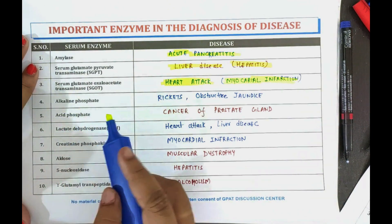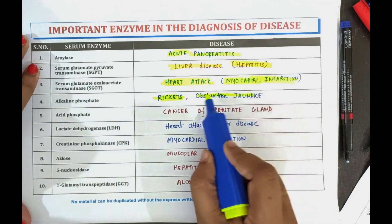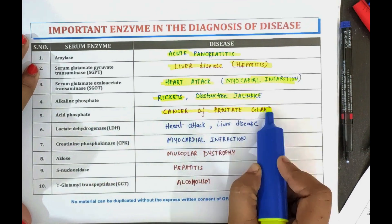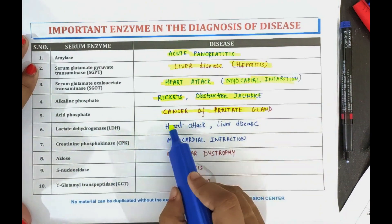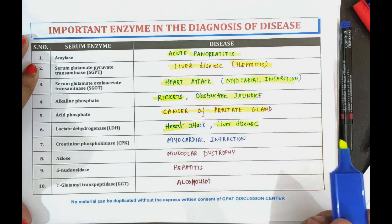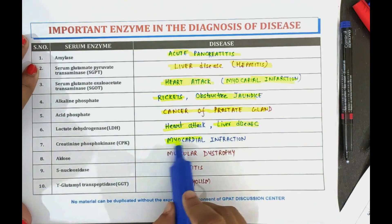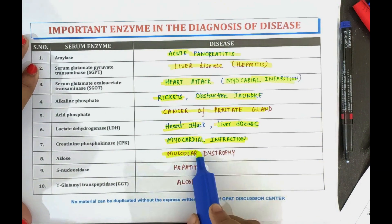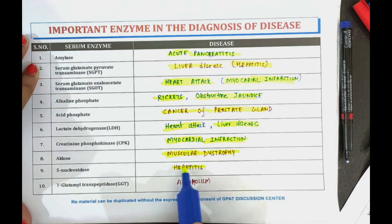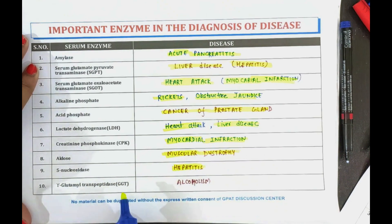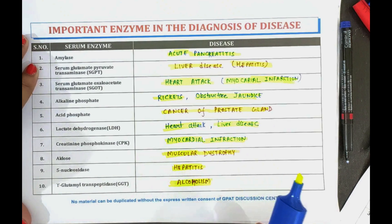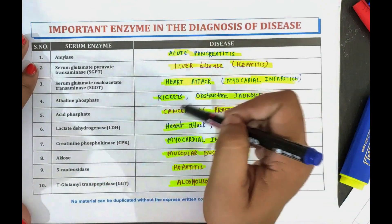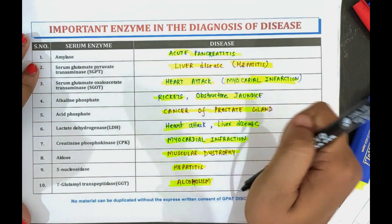In summary: alkaline phosphatase is used to detect rickets and obstructive jaundice; acid phosphatase is used to detect cancer of the prostate gland; LDH enzyme is used to detect heart attack and liver disease; CPK enzyme is used to detect myocardial infarction; LDH is also used to detect muscular dystrophy; 5-nucleotidase is used to detect hepatitis; and GGT enzyme is used to detect alcoholism. These are all very important enzymes used for the diagnosis of disease.